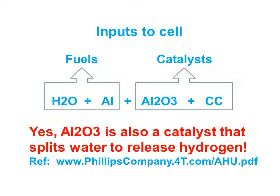The inputs to the cell now have been modified to include the aluminum oxide Al2O3. Big surprise, which is a nice surprise: aluminum oxide is also a catalyst that splits water to release hydrogen. This is explained in more technical detail in the link at the very bottom of this page, the AHU.pdf document.